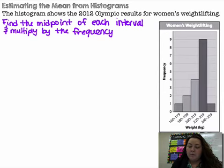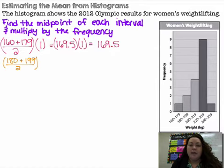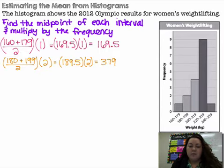To find the midpoint of the first interval, my first interval is going from 160 to 179. So I would add 160 plus 179, and divide by 2 to get the middle number. Then multiply it by 1 because I only have one person in that group. 160 plus 179 divided by 2 gives me 169.5 times 1 equals 169.5. The next interval ranges from 180 to 199. So I'd add 180 plus 199 divided by 2 to get the midpoint for that interval, and multiply it by 2 because I have two people in that interval. 180 plus 199 divided by 2 gives me 189.5 times 2 gives me 379.